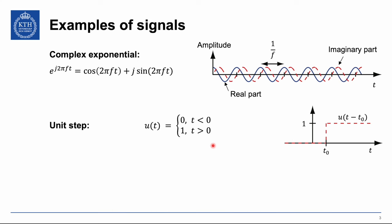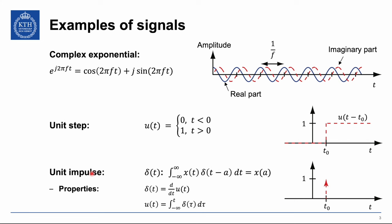If we take the derivative of the unit step that is called the unit impulse. This is a function with some strange properties — it doesn't really have any value at time t0 because it jumps so abruptly; in a way it is infinitely large but in an infinitely small interval. In particular the impulse has a property that if you take another signal x of t, multiply it with delta of t minus a, and take an integral from minus infinity to infinity, the output will be x at time a — the value of t where we get a zero inside the impulse, namely when t equals a.